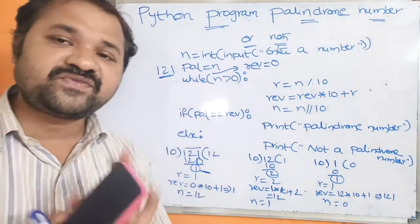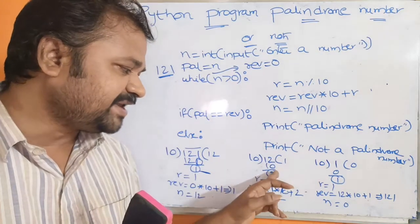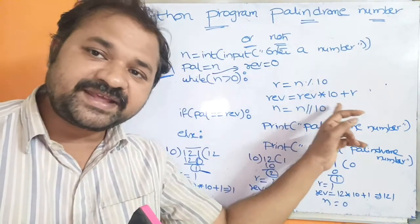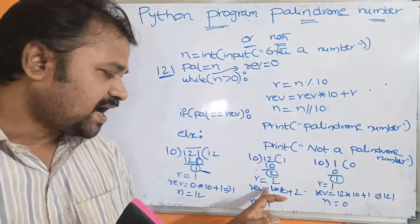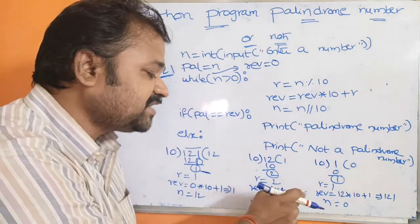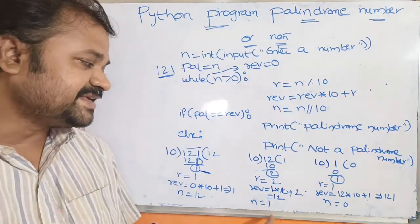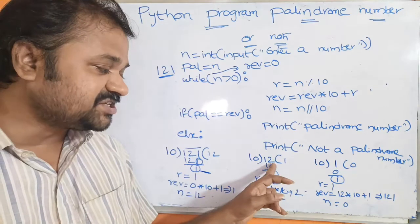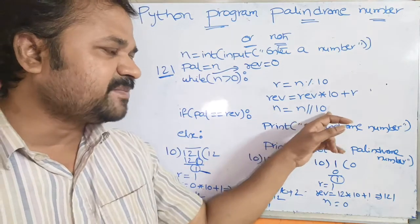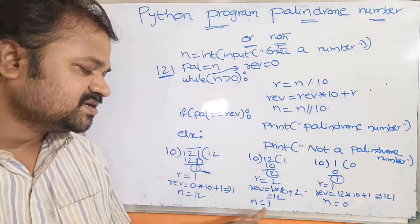Rev = rev * 10 + r. The previous value of rev is 1. So rev = 1 * 10 + 2 = 12. Next, n = n // 10. In this iteration n is 12, so 12 // 10 gives the integer quotient, which is 1. Now n becomes 1. Control goes back to the while condition: 1 > 0 is true, so the body executes again. r = 1 % 10 = 1. The remainder is 1.